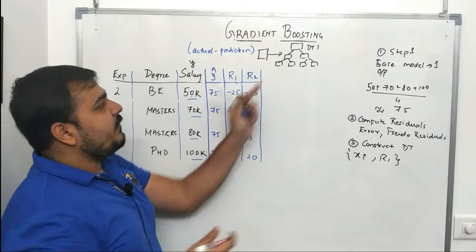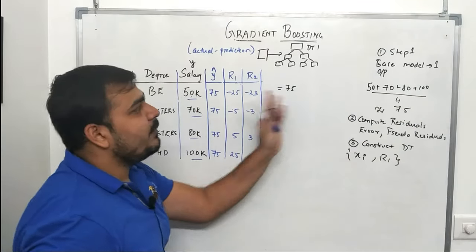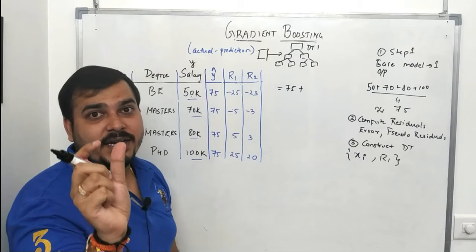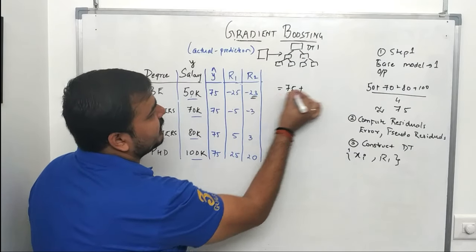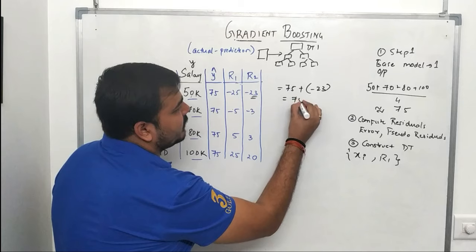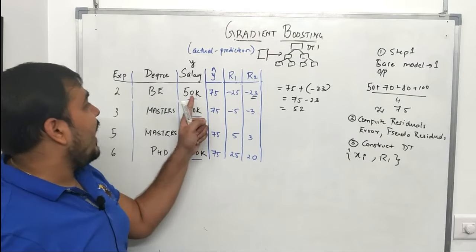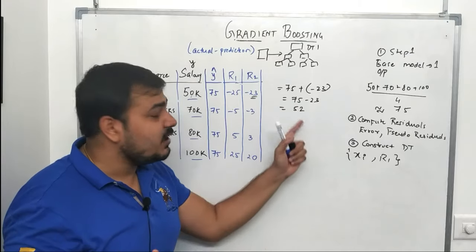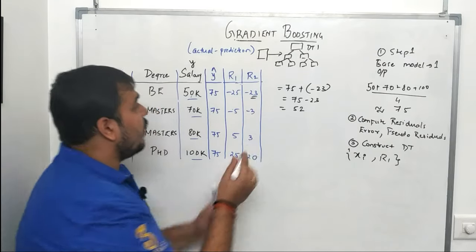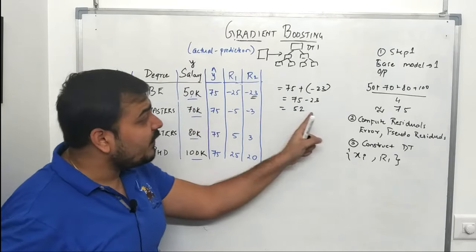The base model always returns 75 for any record. Decision tree one gives a residual — say minus 23 for the first record. So 75 minus 23 equals 52, which is very close to the actual salary of 50. This seems great, but it is actually an overfitting problem, because the prediction is too close to the training target.